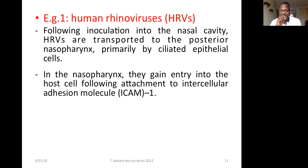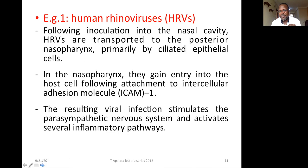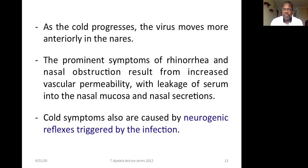When the virus reaches the nasopharynx, it gains entry into the host cell following attachment to intercellular adhesion molecule ICAM-1. Those are receptors for human rhinoviruses. This results in viral infection, stimulating the parasympathetic nervous system and activating several inflammatory pathways. The host response to the virus is believed to be the major cause of cold symptoms. As the cold progresses, the virus moves anteriorly into the nose, and the patient experiences rhinorrhea and nasal obstruction as a result of increased vascular permeability with leakage of serum into the nasal mucosa.